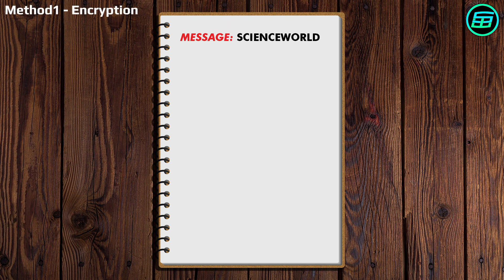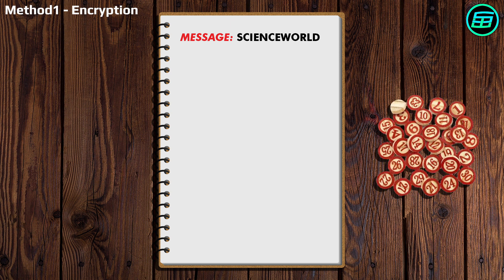Suppose we want to encrypt the text Science World by this technique. There are a few different possibilities. Let's start by generating the key using 12 randomly chosen numbers between 1 and 100.